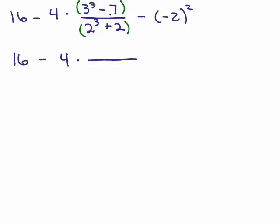So in the numerator, I've got 3 cubed minus 7, I'm going to have to do the exponents first. Remember 3 cubed is 3 times 3 times 3, that is 27 minus 7. And in the denominator, I have 2 cubed plus 2, remember 2 cubed is 2 times 2 times 2, so that's 8 plus 2.